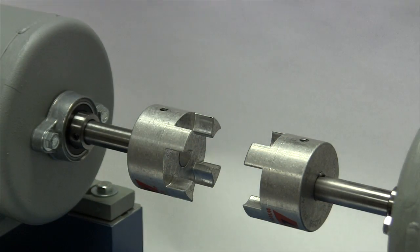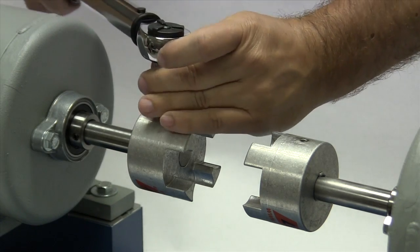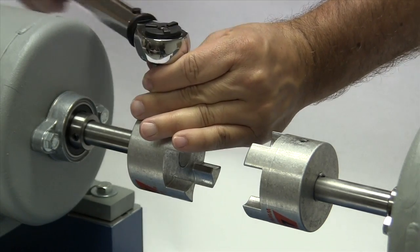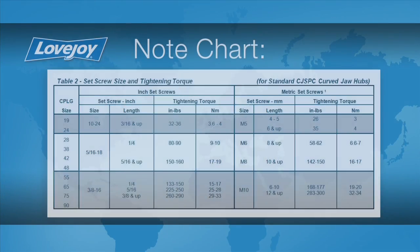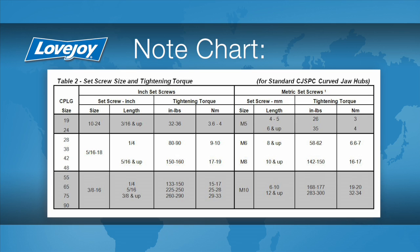The set screws should be tightened to the recommended torque settings using a calibrated torque wrench. The use of a torque wrench is important. If the set screws are not tightened properly, the hub could work loose and slide on the shaft. If the set screws are too tight, they could damage the key, the shaft, or the hub.